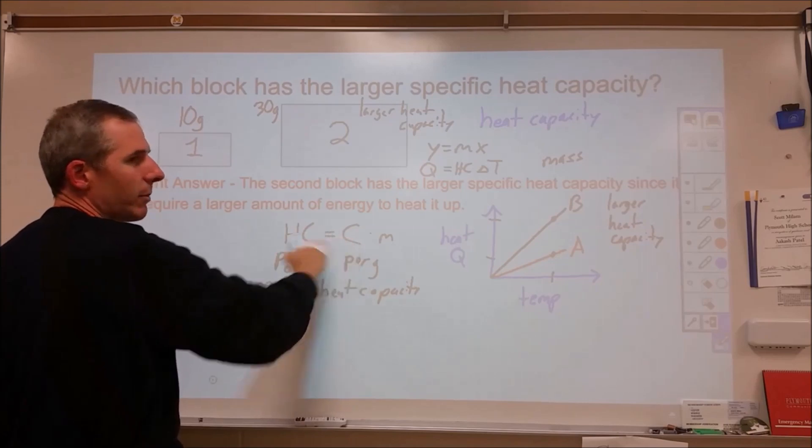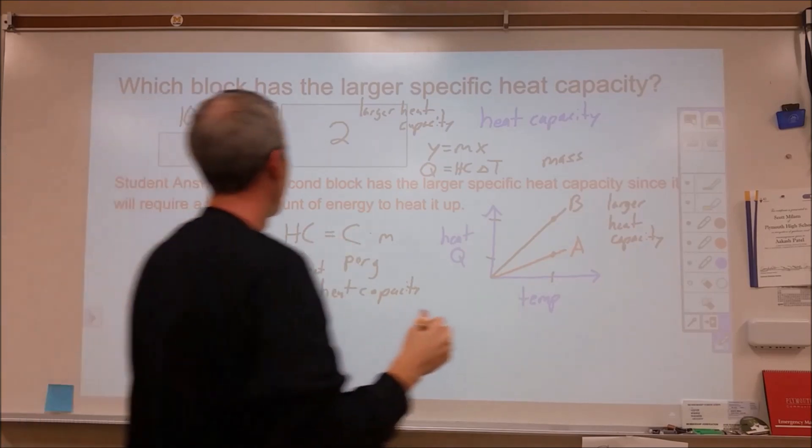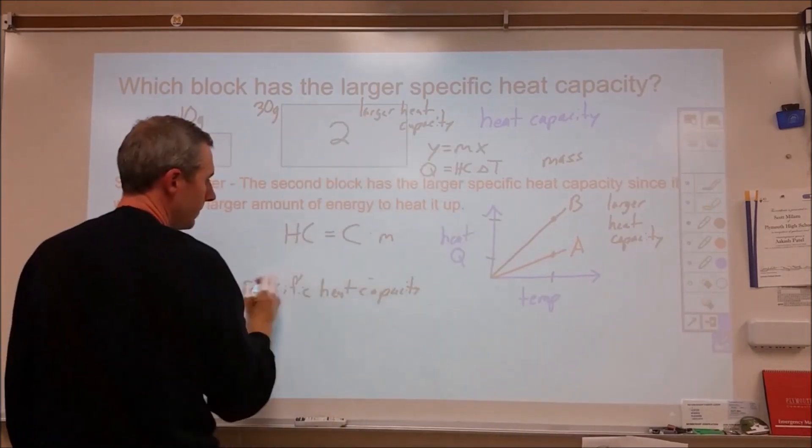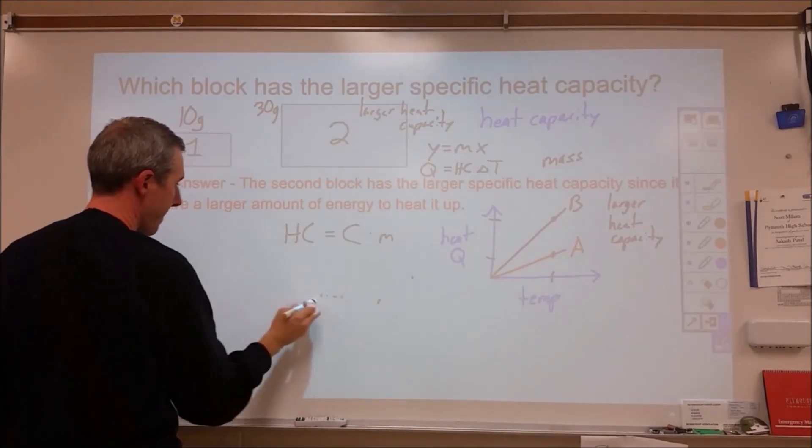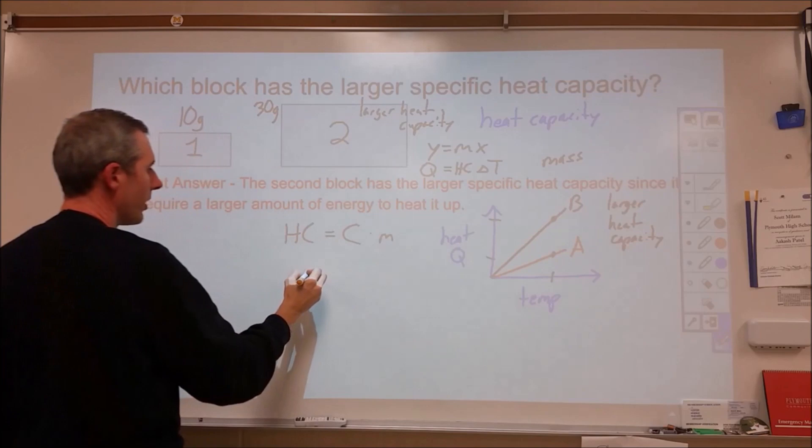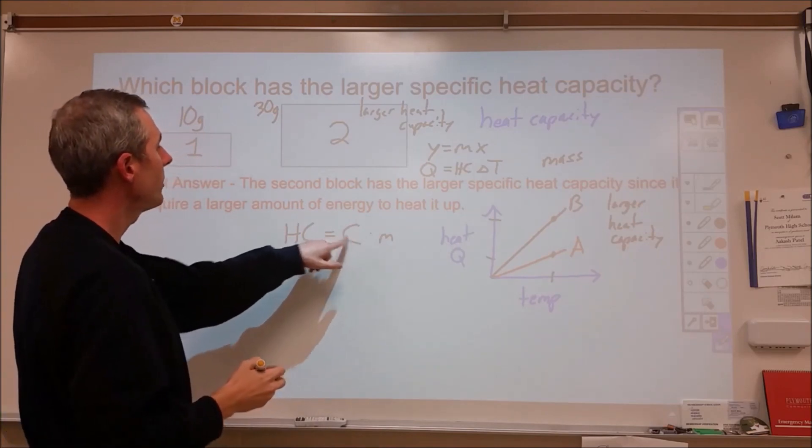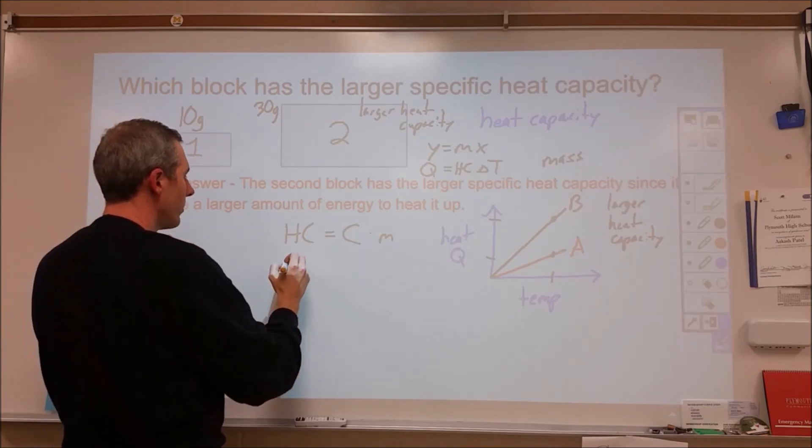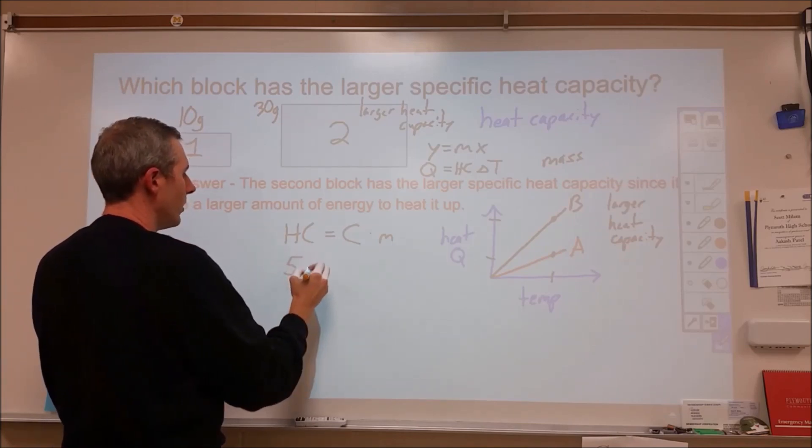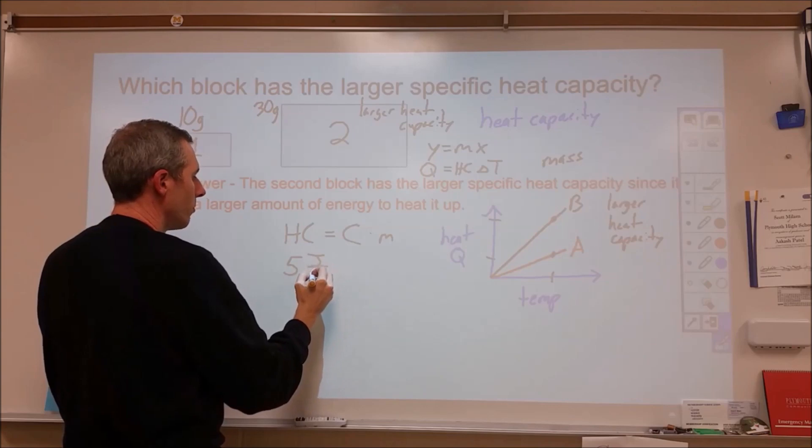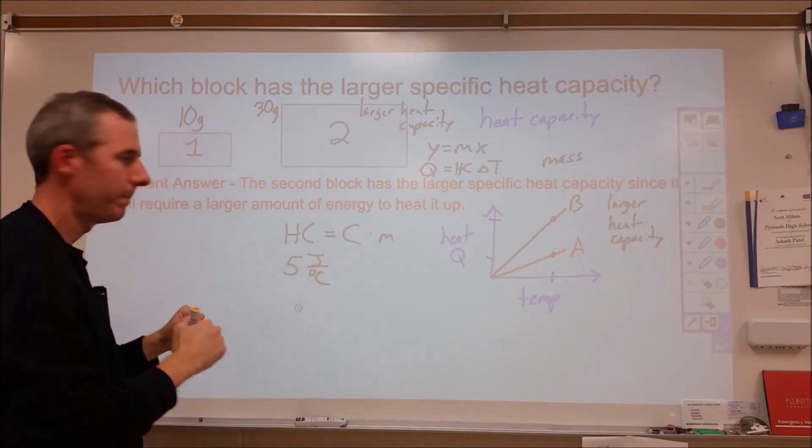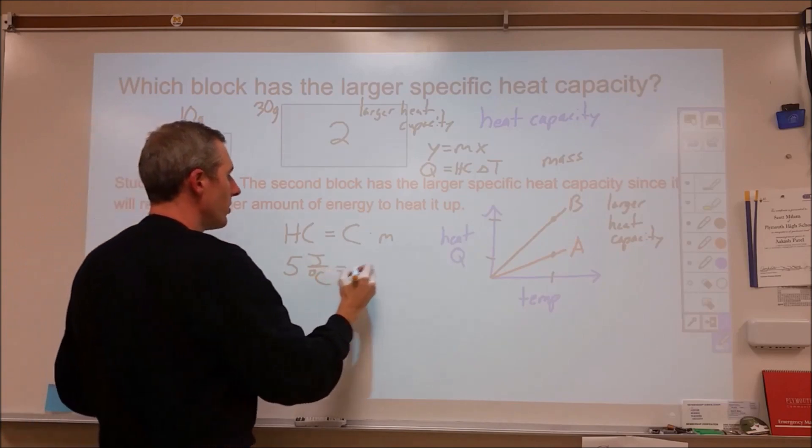Let's go ahead and try and work that out. Let's erase this here and actually plug in some numbers. I'm saying the specific heat capacity of these is the same. In the first one, we might have the heat capacity of, let's say, five, and that's joules per degree Celsius. It takes five joules to heat up this block one degree. That's equal to the specific heat capacity times the mass in grams.